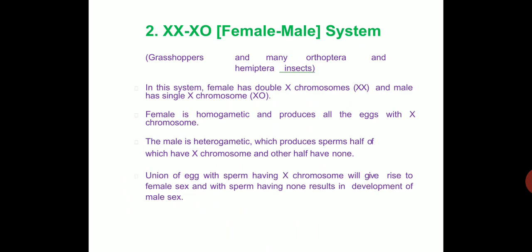The second system is the XX/XO female-male system, found in Grasshoppers and many Orthoptera. In this system, the female has double X chromosomes and the male has a single X chromosome. The female is homogametic and produces all eggs with X chromosomes. The male is heterogametic, producing sperm of which half have an X chromosome and the other half have no sex chromosome. Union of egg with X sperm gives female, and with sperm having no sex chromosome results in male.